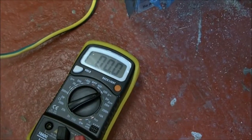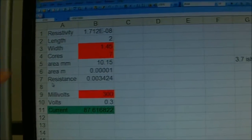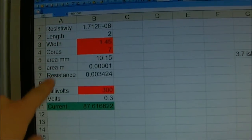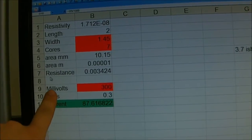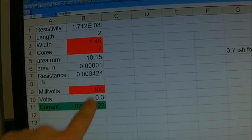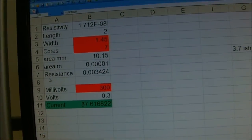So I'll just go and stick that into the Excel spreadsheet. Into the spreadsheet, all the same values as before for the width, cores, and the resistivity of copper. We got 0.3 volts which is 300 millivolts, and that reckons it is 87.61 amps.